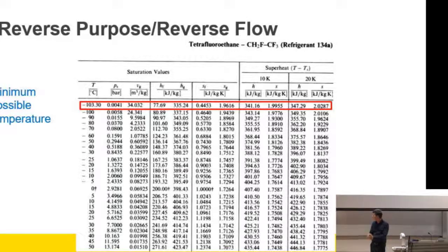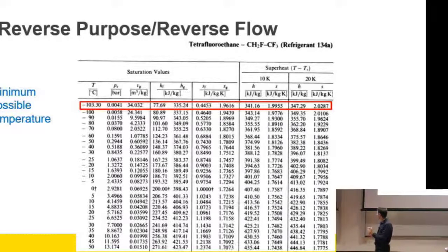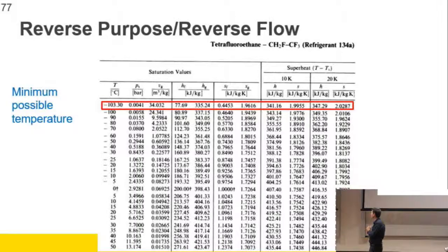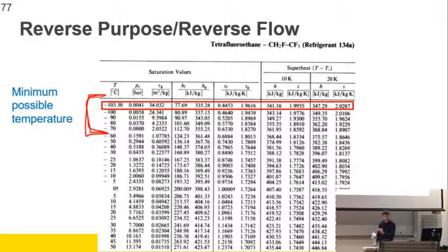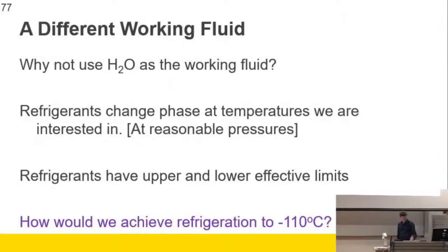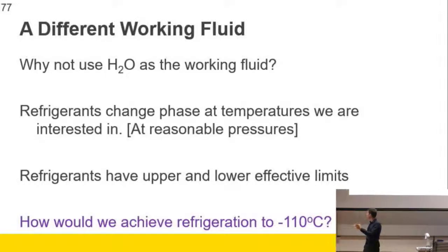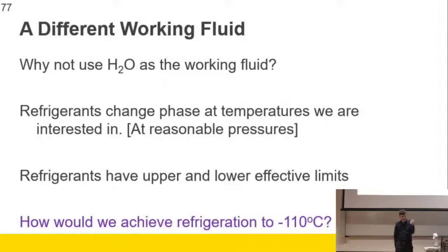There's a minimum possible temperature - this is getting to the point about freezing. I think this is the triple point of R134a, so you just can't get below that. You wouldn't use the refrigerant down in that range because you'd start to get a drop-off in efficiency. So why don't we use water as the working fluid? What would be a restriction of water in a freezer, for example? The water freezes.